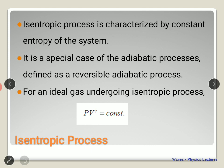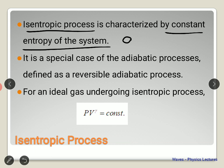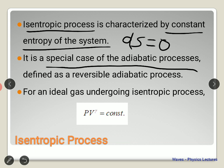The isentropic process is not used very frequently, but it depends on the entropy of the system being constant. If entropy is constant, the change in entropy is zero — and then we call it an isentropic process. It is a special case of adiabatic process, and is defined as a reversible adiabatic process, so it is reversible in nature.